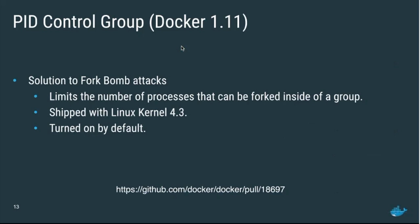Something coming in Docker 1.11 that we just barely missed for 1.10: as of Linux kernel 4.3, there is a PID control group that limits the number of processes that can be forked inside a cgroup. We turned this on by default in Docker 1.11. Once the PR gets merged, you'll be able to give someone a shell knowing no fork bomb can take down your system, because the cgroup PID limit protects you.